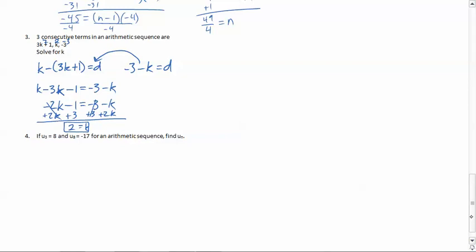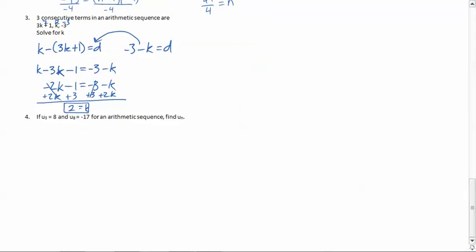Not too bad. Last one for this sheet. If the third term, u₃, equals 8 and the eighth term, u₈, equals negative 17, find uₙ. So it's asking for the general term. So we know that uₙ for an arithmetic sequence, which is what it tells us, is equal to the first term, which we don't know what that is, so we're going to have to find the first term. But then we're going to add n minus 1 times d. So we're going to need the first term, we're also going to need the difference. The n will stay n because since it's the general term, we want to be able to put in any number and find any term.